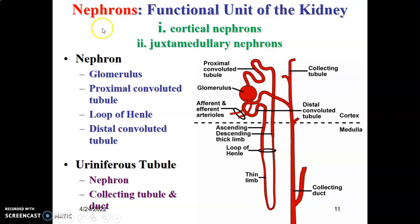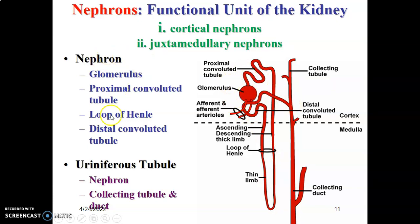The functional unit of the kidney is the nephron — the basic structural and functional unit. There are two types: cortical nephrons and juxtamedullary nephrons. The parts of the nephron include the glomerulus, then urinary substances enter the proximal convoluted tubule, the loop of Henle, and then the distal convoluted tubule. The uriniferous tubules are formed by the collecting tubules and collecting ducts.